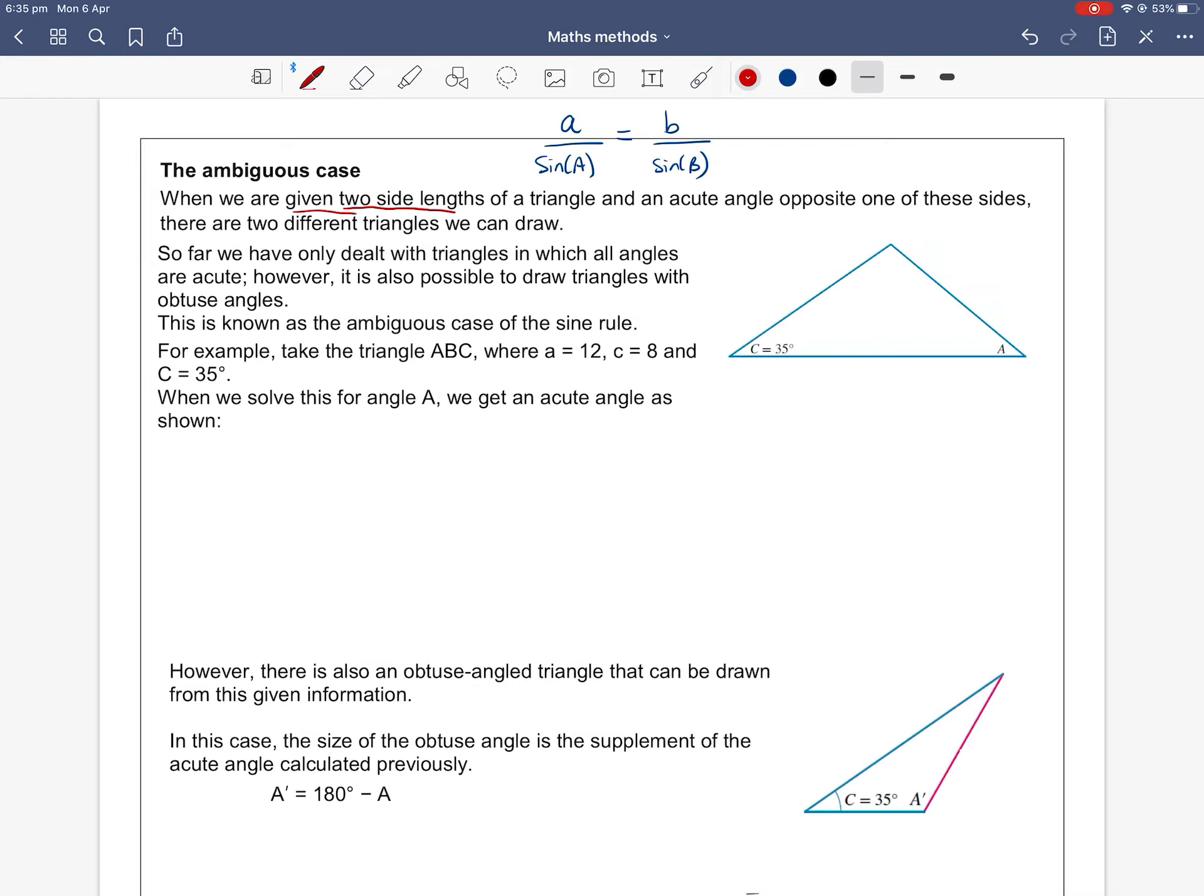Let's have a read. When we are given two side lengths of a triangle and we know an acute angle, remember acute angles are angles which are less than 90 degrees, which are opposite one of these known sides, then there are two possible triangles which we can draw.